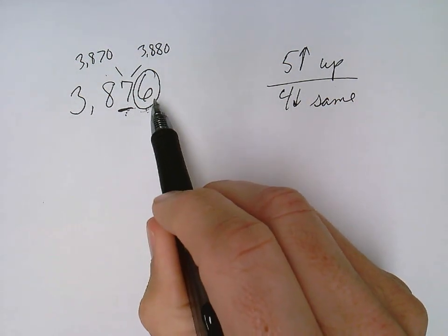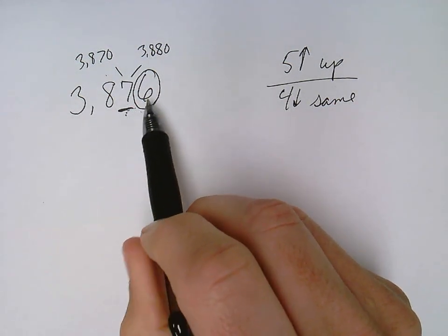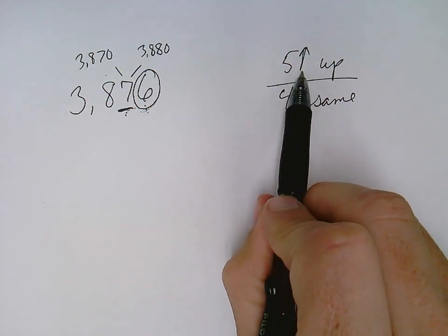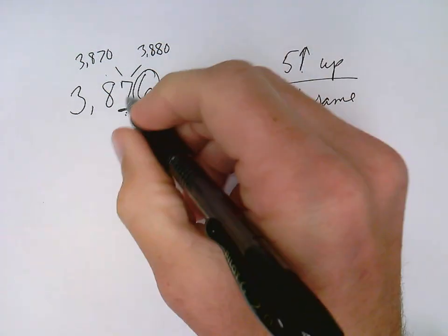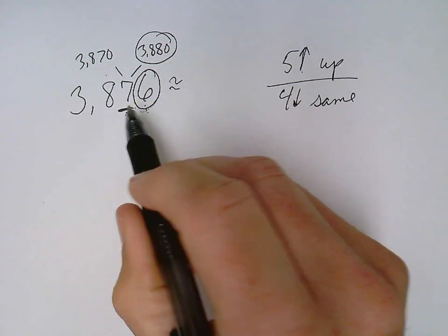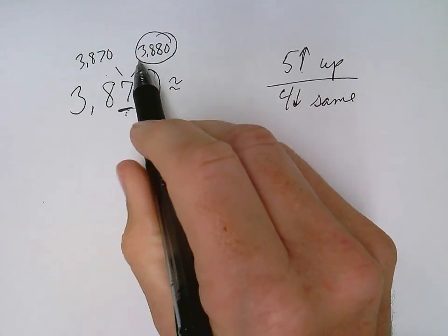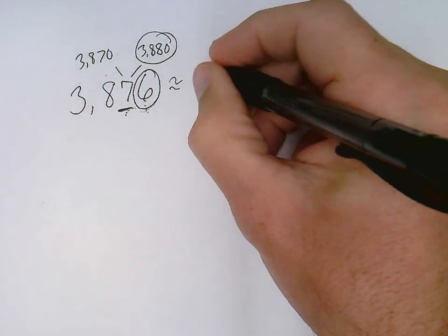In this case, my circle digit is a six. It is a five or higher, so my underlined digit is going to go up, and since it went up to an eight, 3880 is my answer.